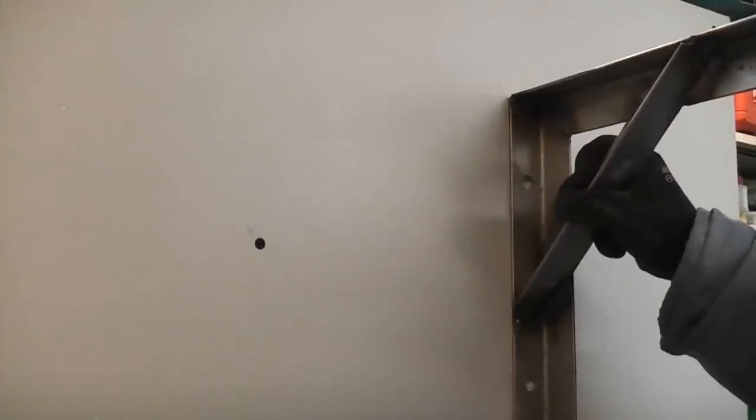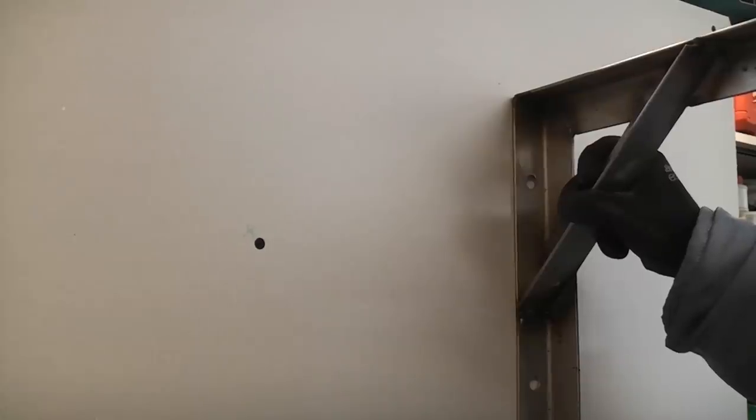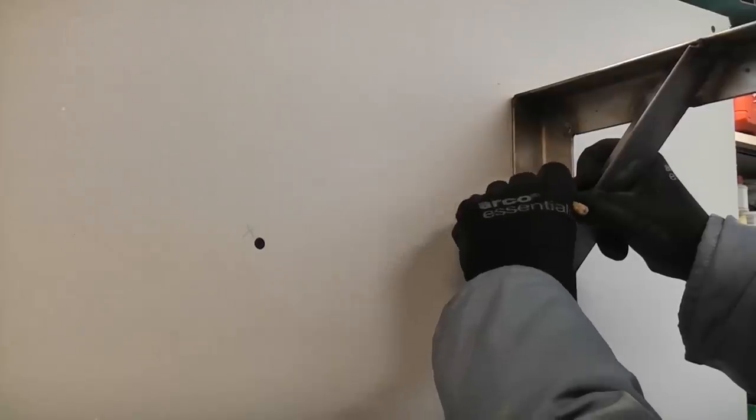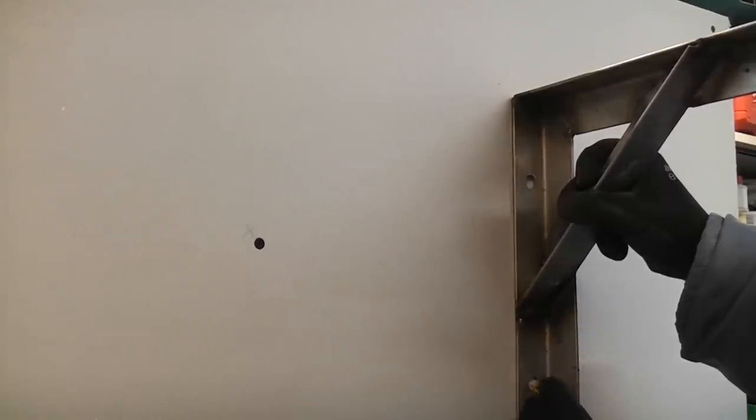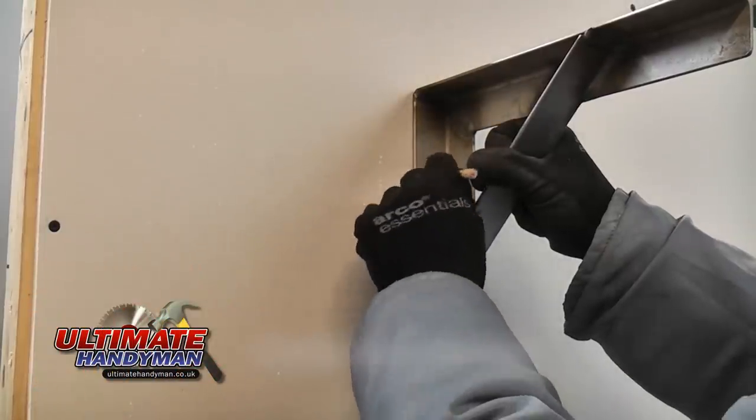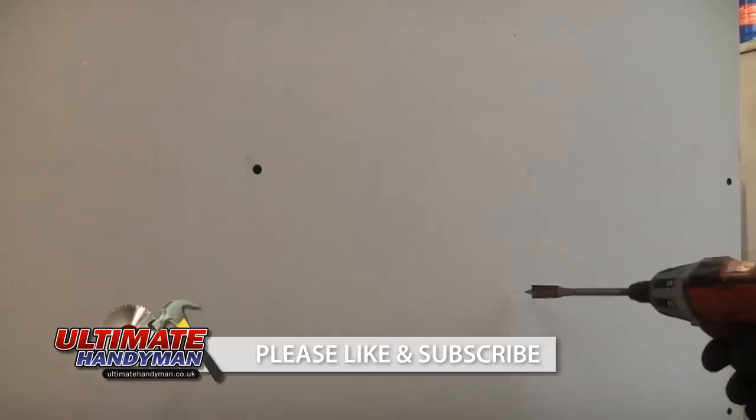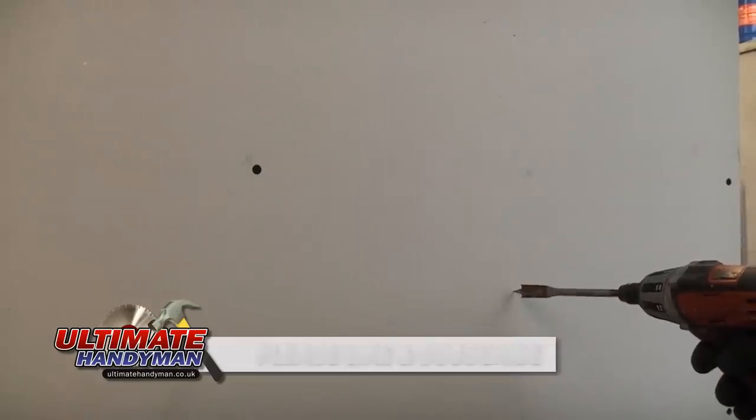We simply need to place the bracket in position where we want it. I'm then going to mark through the two fixing holes, do that for both brackets, and then I'm just going to drill a 13mm hole through there.